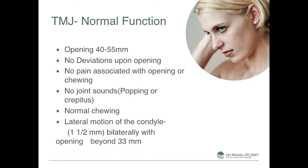Let's talk about the TMJ itself. A normal jaw opens 40 to 55 millimeters. An EDS patient can open up to 75 millimeters — we're talking about baseballs and fists in their mouth, hypermobility in a big way. But in a normal joint there's no deviation when the jaw opens, no pain with opening or chewing, no cracking, no popping in the joint, and the lateral motion of the condyles is one to one-and-a-half millimeters.